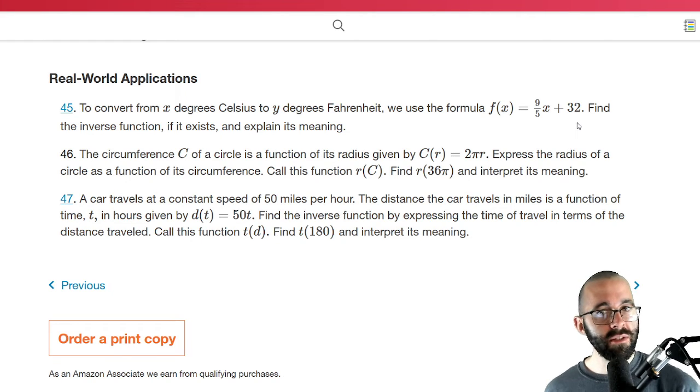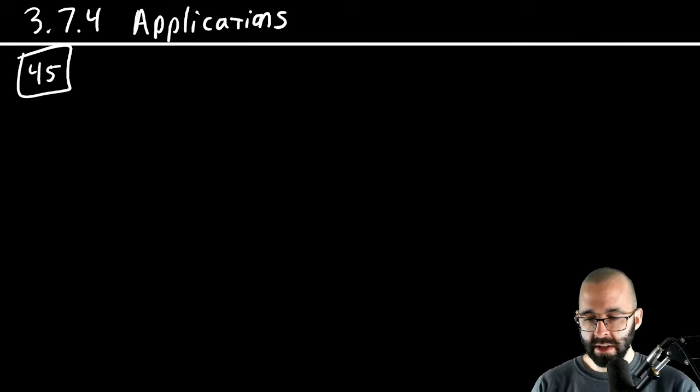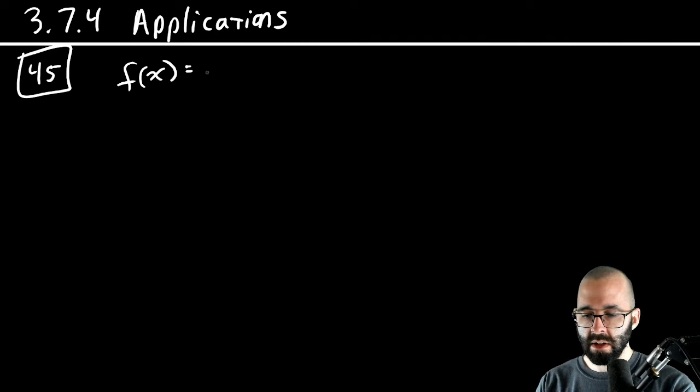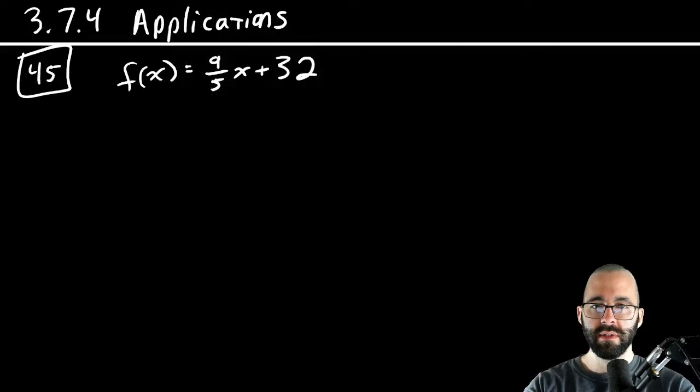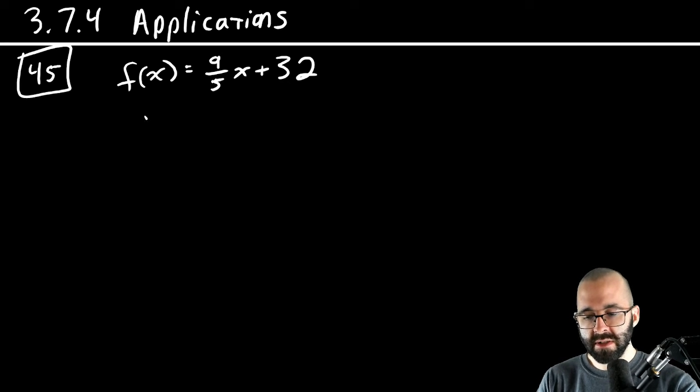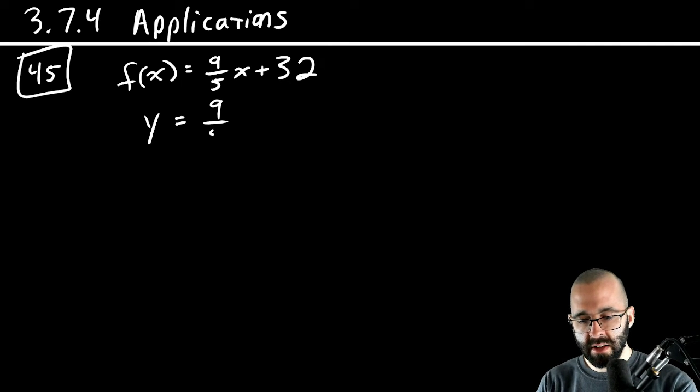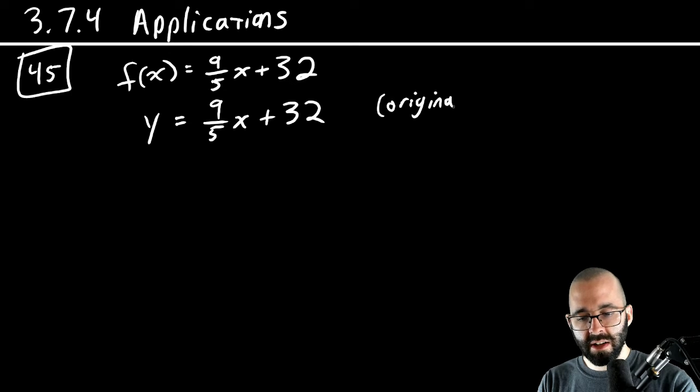So we're going to find the inverse function if it exists and explain its meaning. If f(x) equals 9/5 x plus 32, to find the inverse, let's call this y. Switch the x's and the y's. This is our original function. The inverse is going to be what happens when you switch the x's and the y's and solve for y.